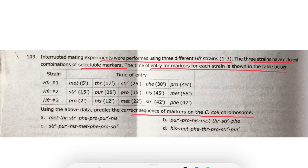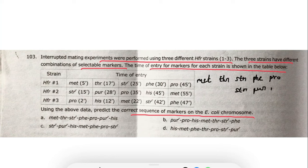We have to find out the correct order. For the first strain it is: methionine, threonine, streptomycin, phenylalanine, and proline. For the second strain it is: streptomycin, pyromycin, proline, histidine, then methionine. For the third strain it is: proline, histidine, methionine, streptomycin, and pyromycin.